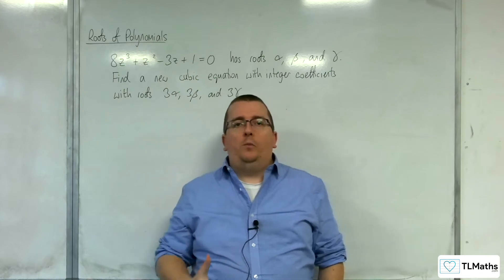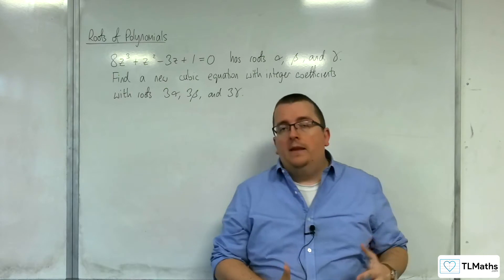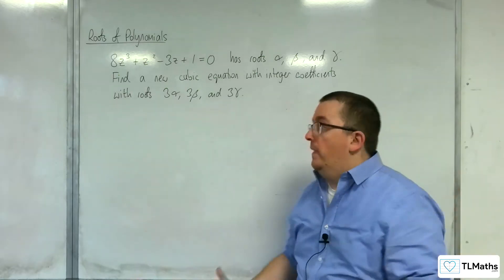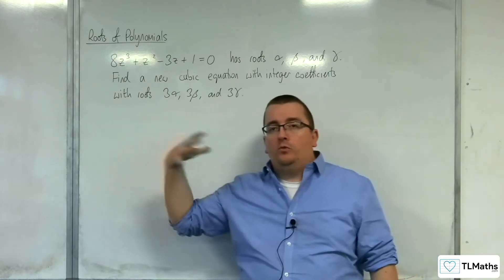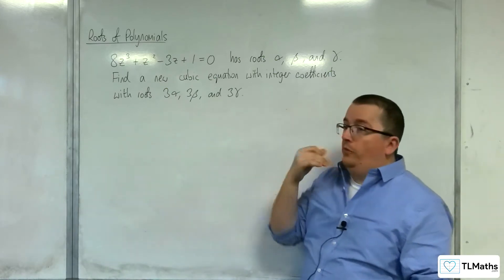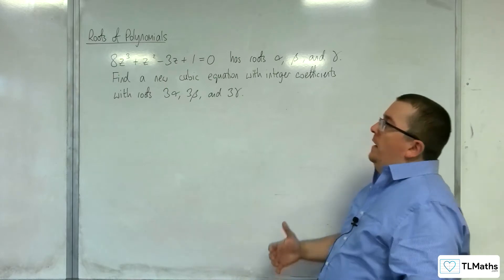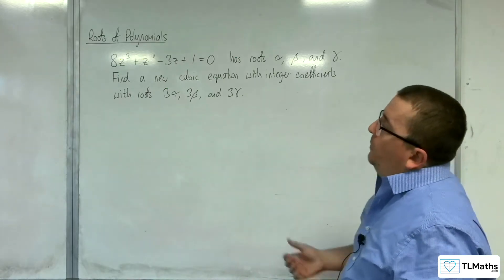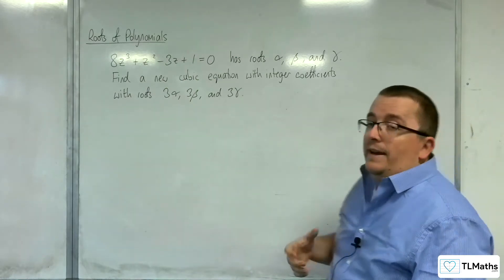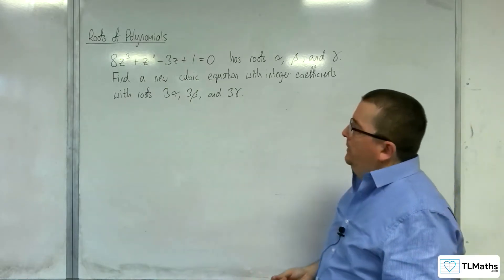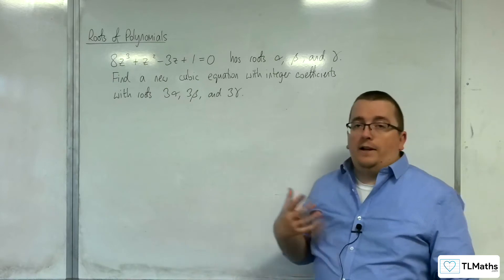We've seen with quadratics that we can take a cubic with roots alpha and beta and transform it so that we have a new quadratic with a linear transformation of those roots. It's not limited to a linear transformation, but we've seen that. Now we're going to do the same with cubics. In this problem, 8z cubed plus z squared take away 3z plus 1 equals 0, with roots alpha, beta and gamma. Find a new cubic equation with integer coefficients with roots 3 alpha, 3 beta and 3 gamma.